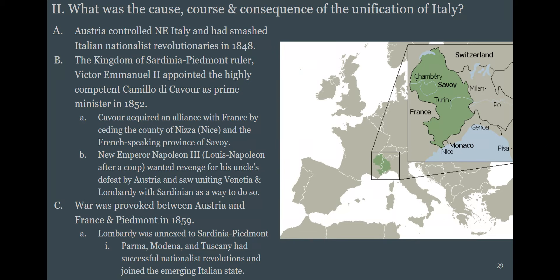Unification of Italy takes place basically as Sardinia-Piedmont, with the help of France, after the Crimean War, is ready to upset the status quo. The revolutions of 1848 are crushed by Austria, so the Venetians and the people of Lombardy in northeast Italy are not able to get free from Austria. The kingdom in the northwest — Sardinia-Piedmont — gets a brand new prime minister who is kind of a genius.